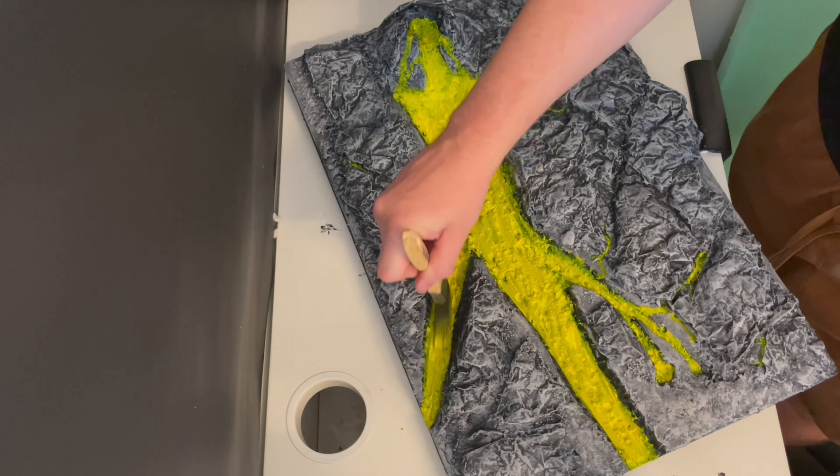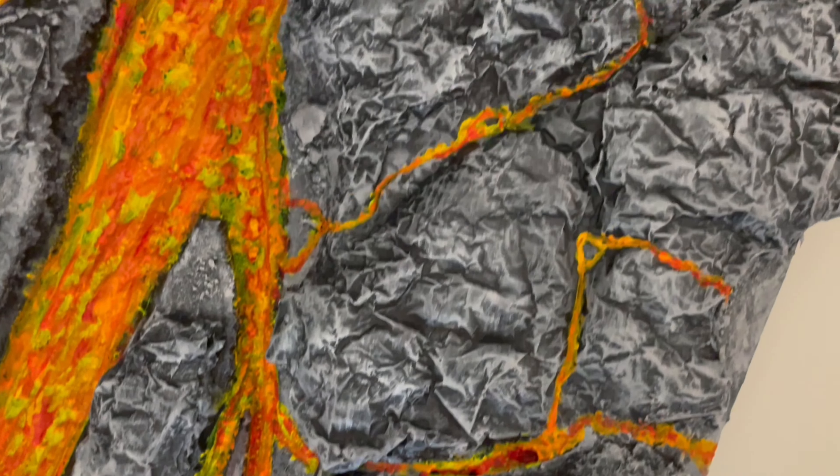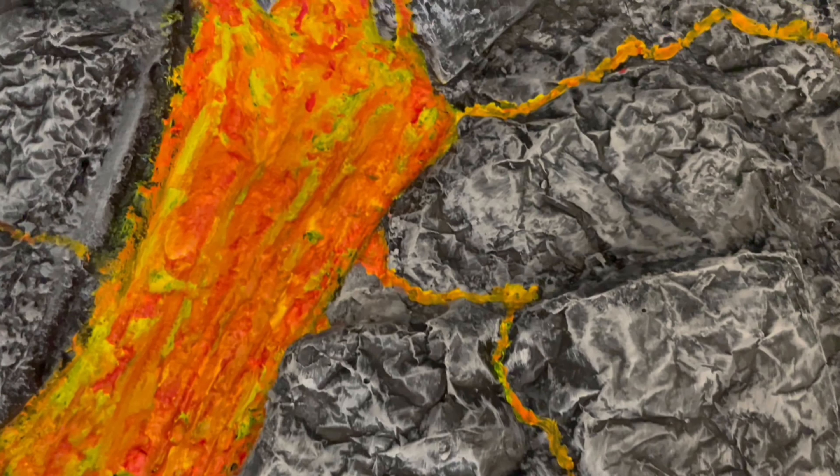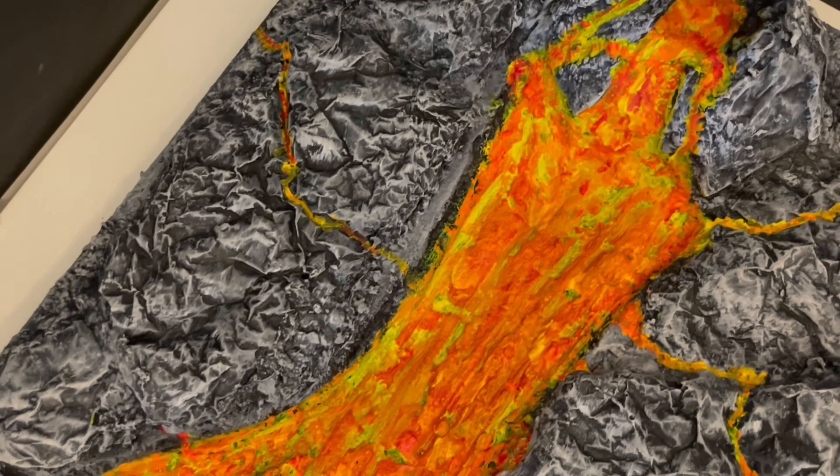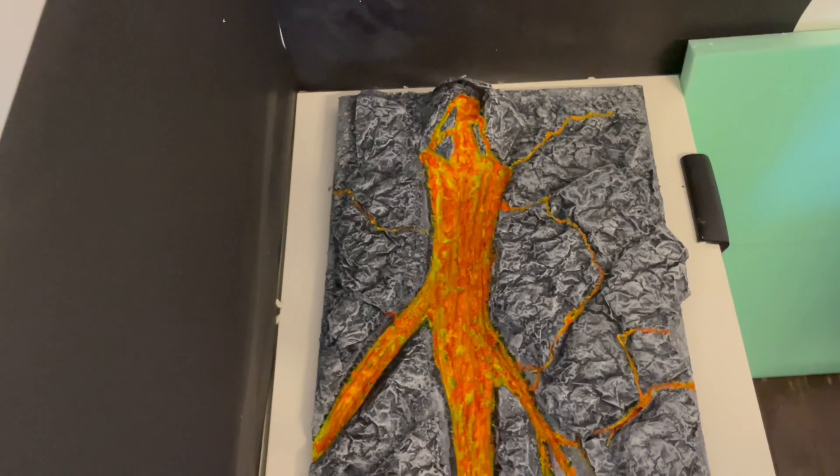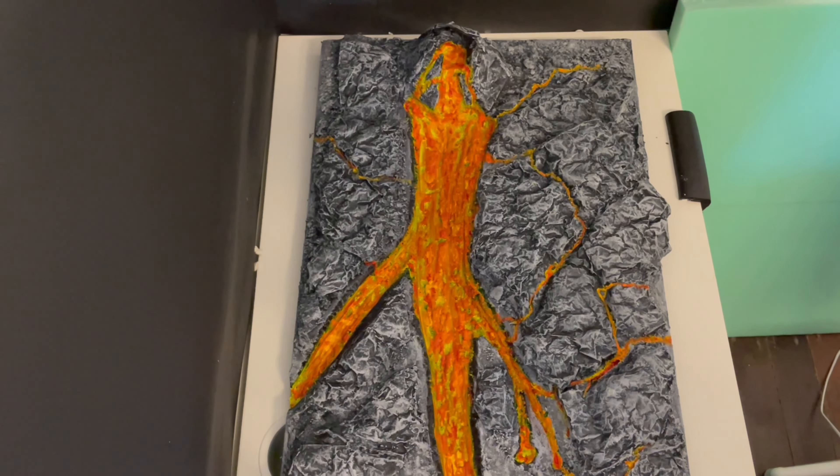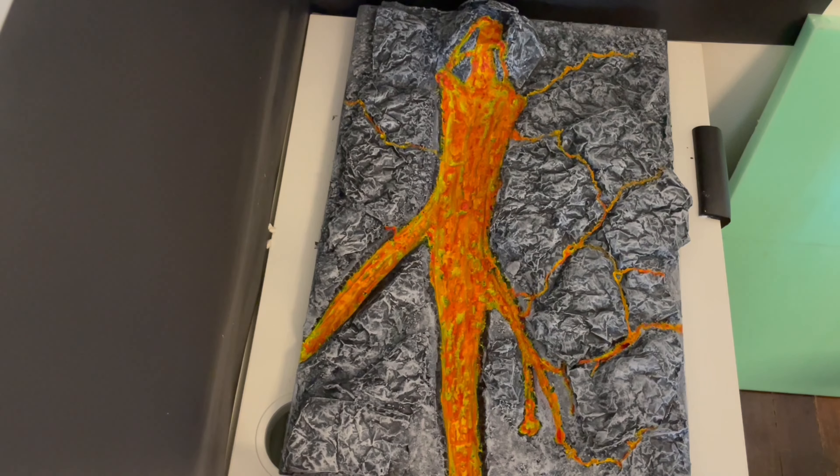This point is when I started painting in the lava veins, just using the same technique, starting with yellow and blending in the orange and red on the outside and the raised edges.